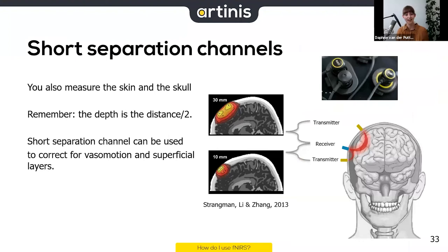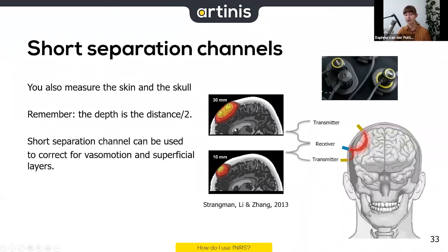Remember when I mentioned you also measure the skin and skull? The depth at which you measure is approximately the inter-optode distance divided by two. With a transmitter and receiver at 30 millimeters apart, light travels mostly through the neocortex. If you place a shorter channel with only 10 millimeters inter-optode distance, the light will travel mostly through the skin and skull.